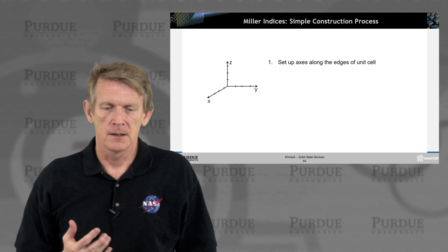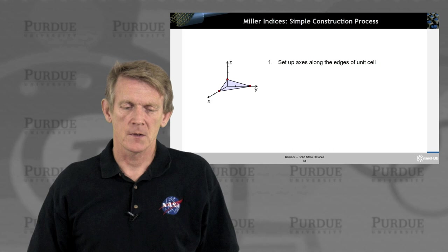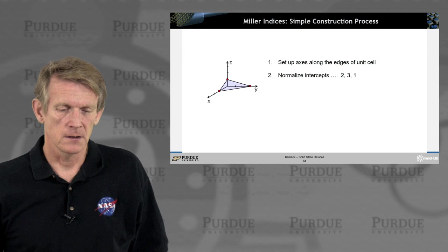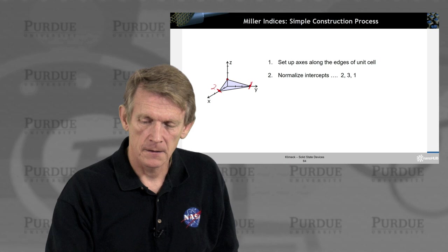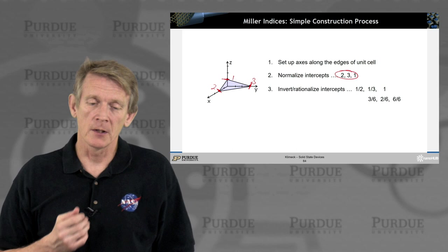So what's the simple construction process for such a system? You set up your edges of the unit cell in x, y, z. You take three intersection points of your surface within that cell. So you have intercepts here. We look at x is here at 2, you have y at 3, and z at 1.